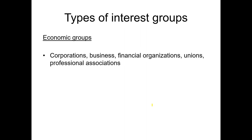Economic groups include the corporations, businesses, financial organizations, unions, and professional associations. A corporation such as Microsoft, Amazon, or Google can use their profits to lobby or make campaign contributions to try to get the attention of government and get policies that give them advantages to increase their revenue and maximize their profit. Financial organizations such as banks, and unions to a lesser extent because they represent workers. Professional associations represent almost every profession out there in the United States.